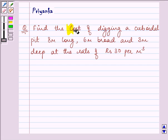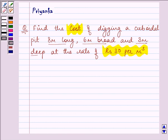Find the cost of digging a cuboidal pit 8 meter long, 6 meter broad and 3 meter deep at the rate of rupees 30 per meter cube.